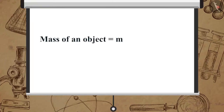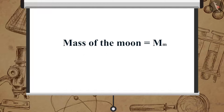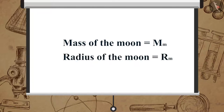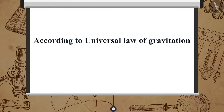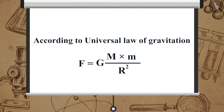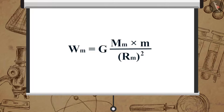Let the mass of an object be m, and let its weight on the moon be Wm. Let the mass of the moon be Mm and its radius be Rm. According to the universal law of gravitation, F = G × M × m / r². Applying this, the weight of the object on the moon is: Wm = G × Mm × m / Rm².